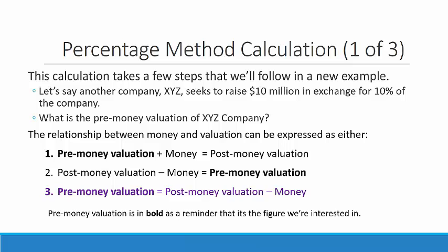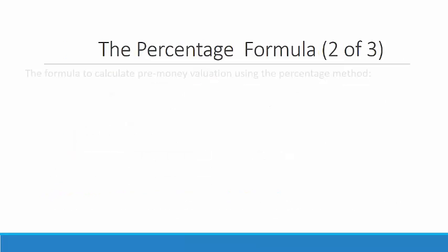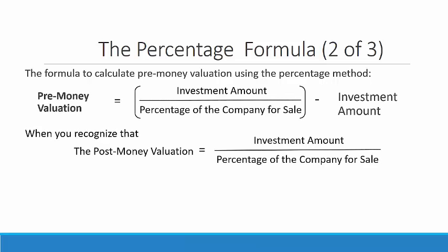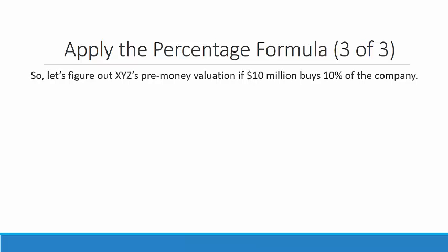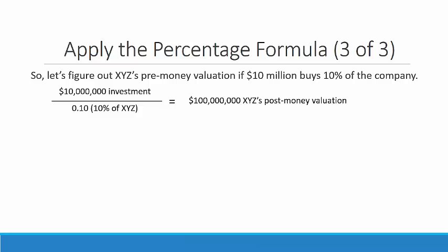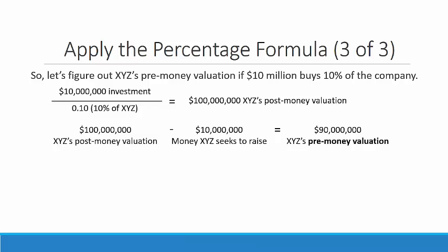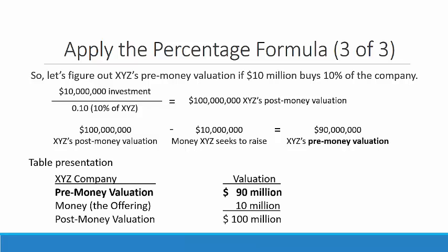Pre-money valuation equals post-money valuation minus the money — pre-money valuation is in bold as a reminder that it's the figure we're interested in. The post-money valuation equals the investment amount divided by the percentage of the company for sale. So, pre-money valuation equals post-money valuation minus the money. Let's apply the percentage formula: if $10 million buys 10% of the company, we divide the $10 million investment by 10% to get a post-money valuation of $100 million. Subtract the $10 million to be raised, and we have XYZ's pre-money valuation of $90 million. In a table, we see the pre-money of $90 million plus $10 million equals a post-money valuation of $100 million.